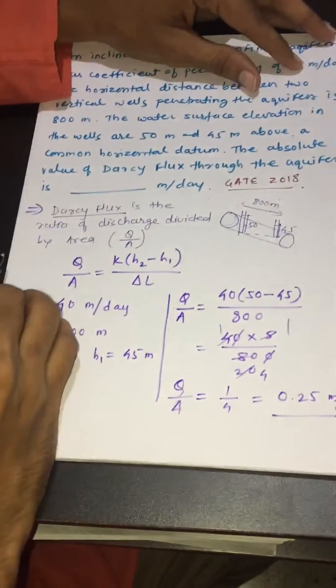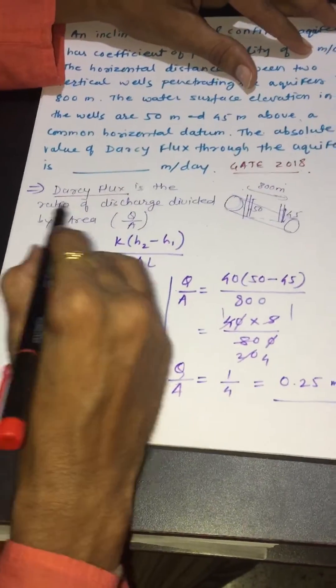First of all, what is Darcy flux? Darcy flux is the ratio of discharge divided by area.